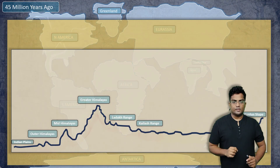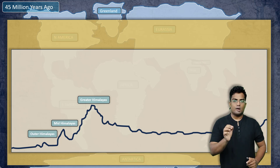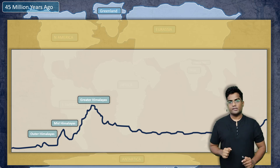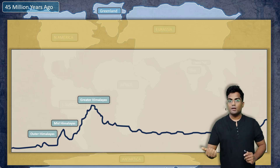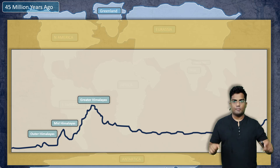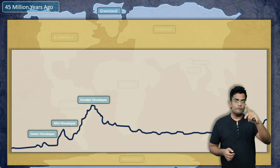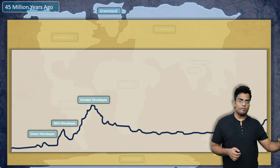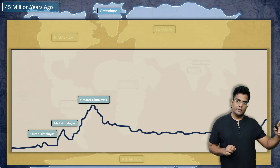Looking at the heights of these structures, the Greater Himalayas has the maximum height, followed by the Mid-Himalayas and the Outer Himalayas. Why does the Greater Himalayas have the highest height? The answer is simple: imagine you have a carpet on the floor. Push that carpet toward the wall of your room. When it hits the wall, you will see a very big wave followed by smaller waves. Essentially, this big wave is the Greater Himalayas, the second is the Mid-Himalayas, and the third is the Outer Himalayas.